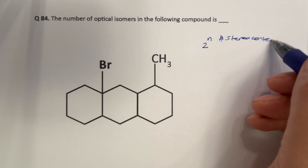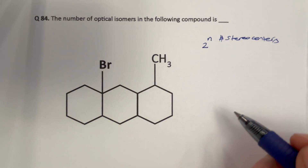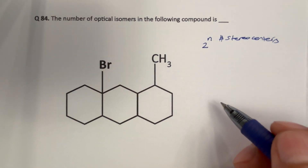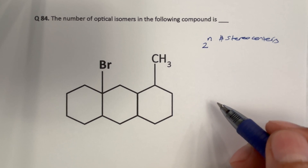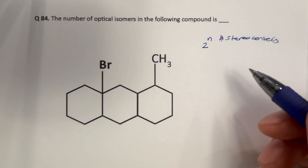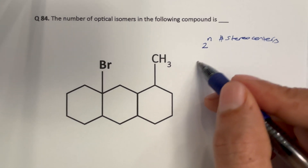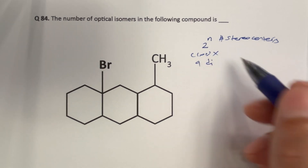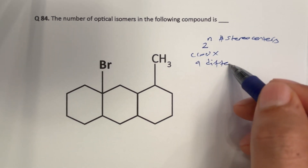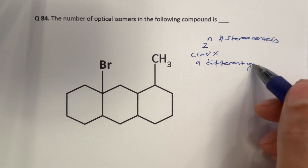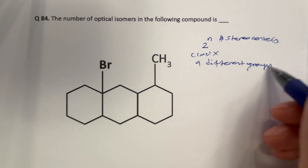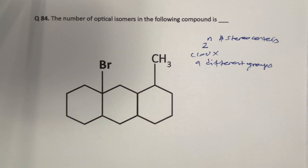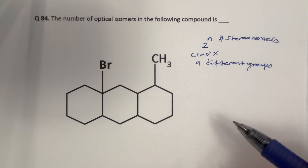In this case, chiral centers and stereocenters are one and the same, and therefore we need to figure out the number of chiral centers here. When we call something a chiral center, if a carbon atom or heteroatom is attached to four different groups, then we can say that it is a chiral center. In this case, we are just going to have chiral carbons.